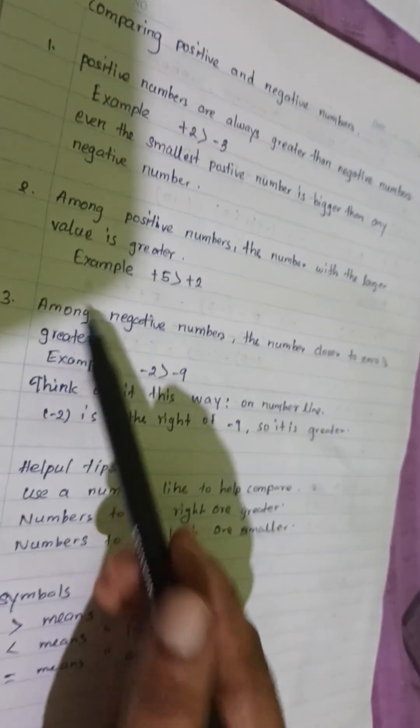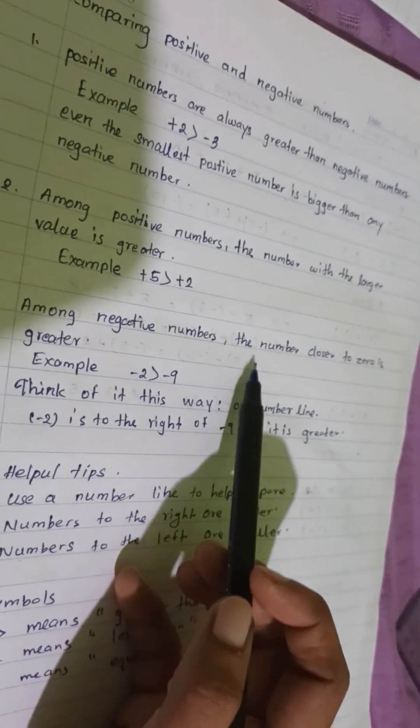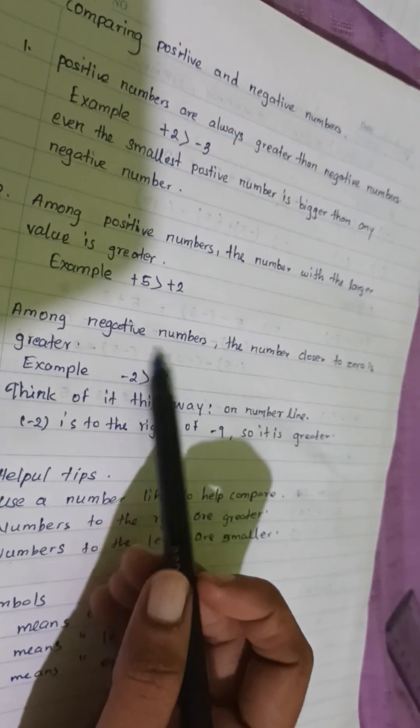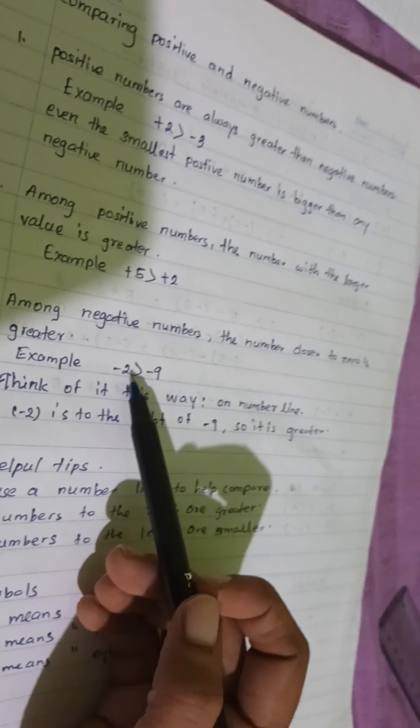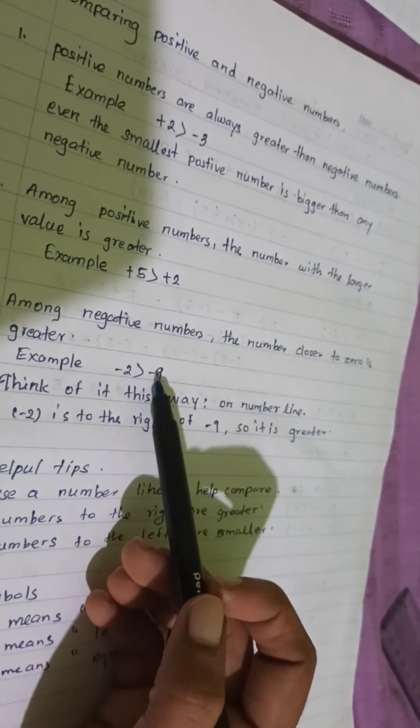Among negative numbers, the number closer to 0 is greater. Example, negative 2 is greater than negative 9.